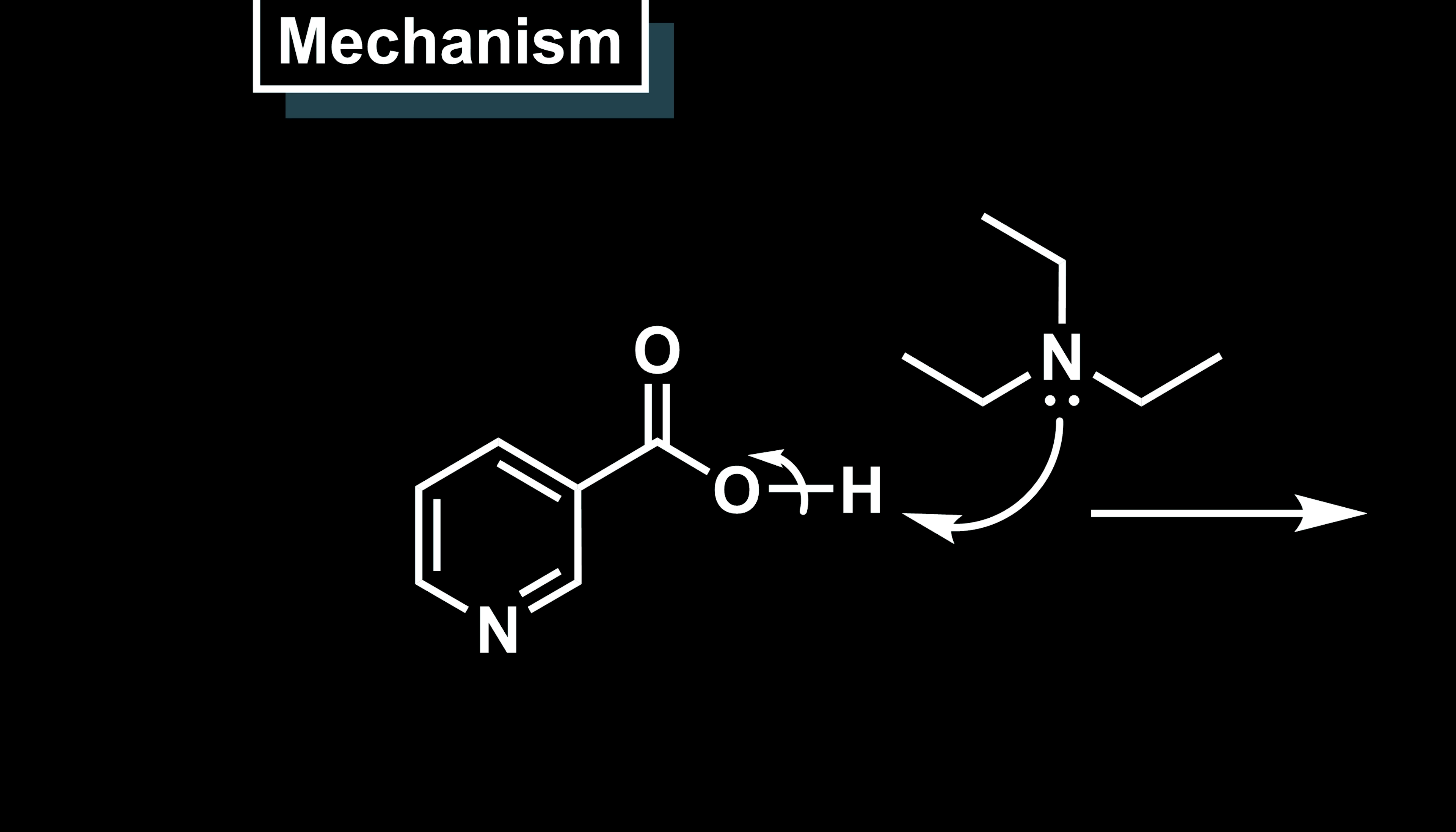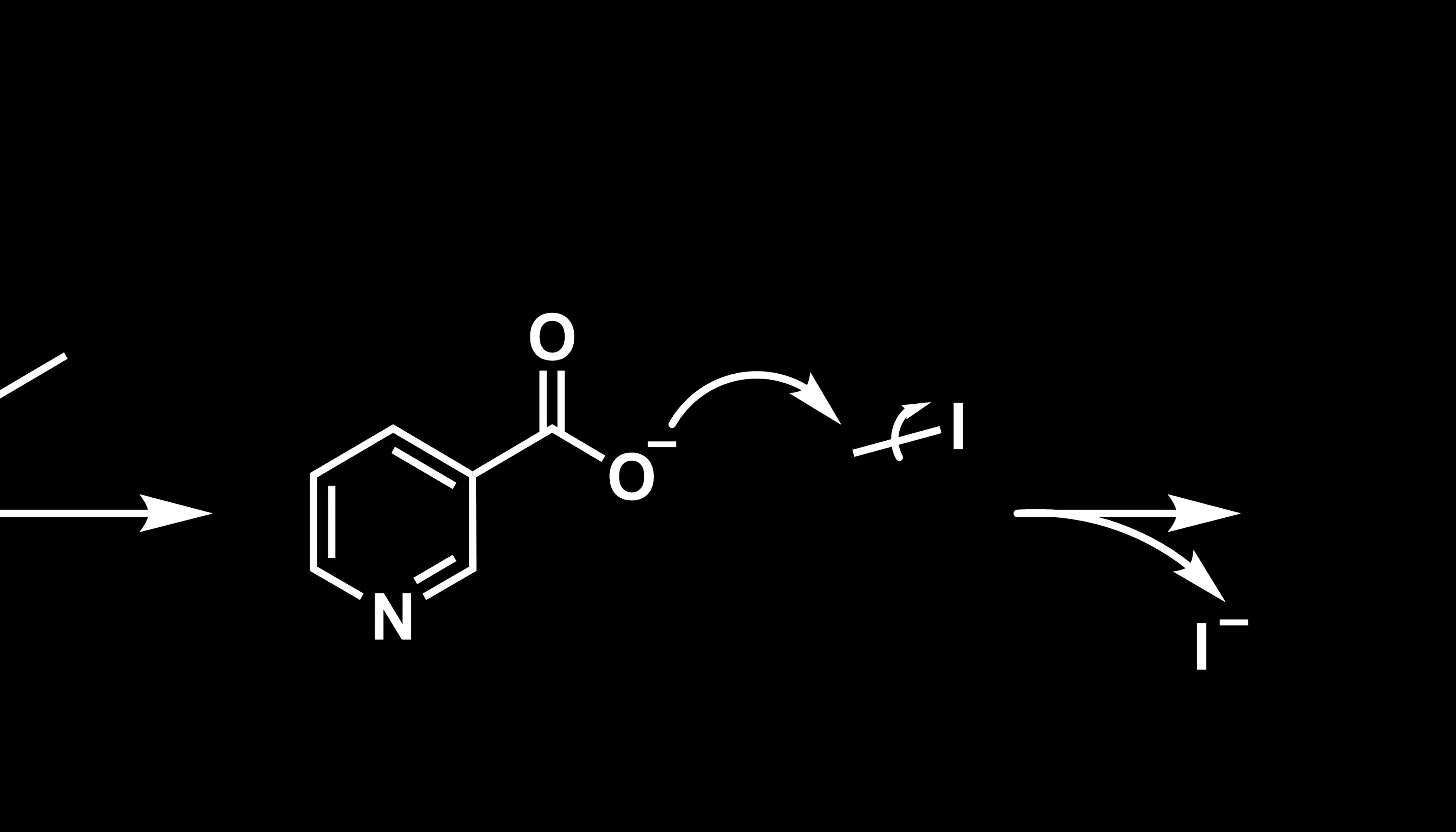What's happening overall is our nicotinic acid will react with methyl iodide and triethylamine to create our quaternary ammonium salt. To start things off, triethylamine will deprotonate our carboxylic acid. The carboxylate anion will then attack methyl iodide, as iodine is a good leaving group, and this ejects out iodide.